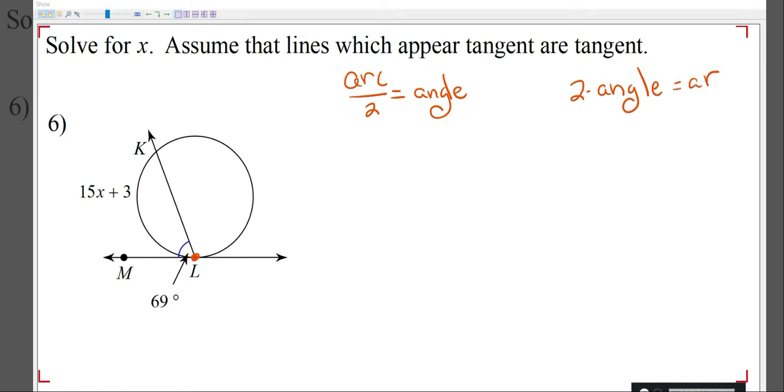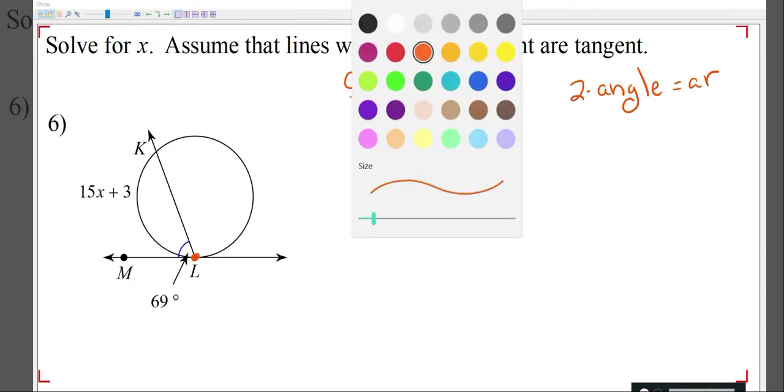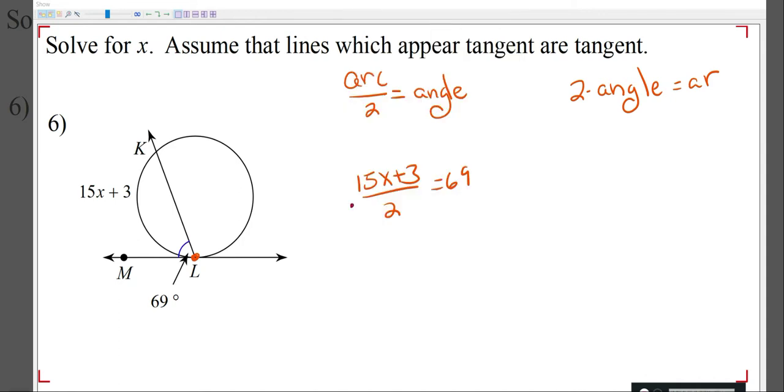I'm going to go with this first one. I'm going to do 15x plus 3 divided by 2 equals 69. My next step, I've got to clear out my denominator, so multiply both sides by 2.